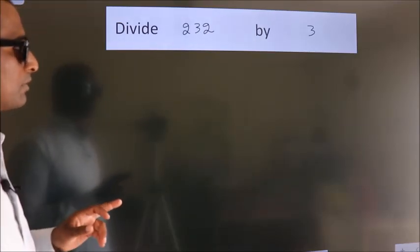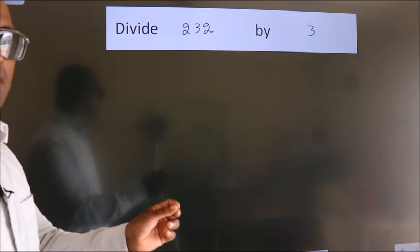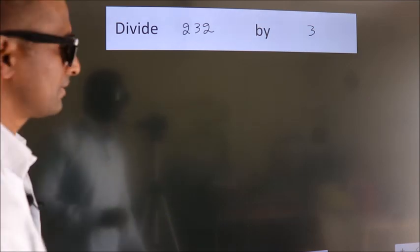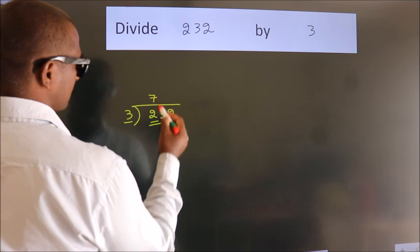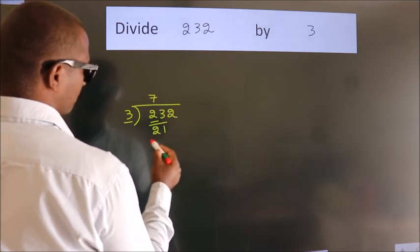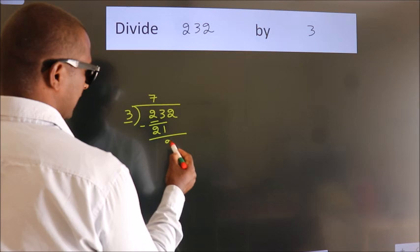Divide 232 by 3. To do this division, we should frame it in this way: 232 here, 3 here. This is your step 1.